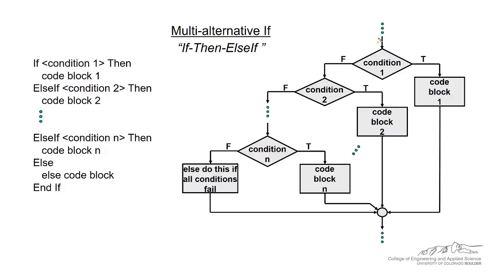The flowchart looks like this. We come into it, and we ask ourselves, is the first condition true? If that's true, then we go to code block one. If the first condition is false, then we move along and we do a second conditional statement. If that's true, we have a certain code block. If it's false, then we keep going.